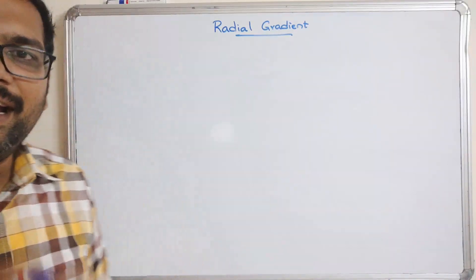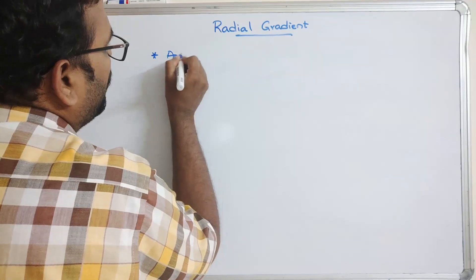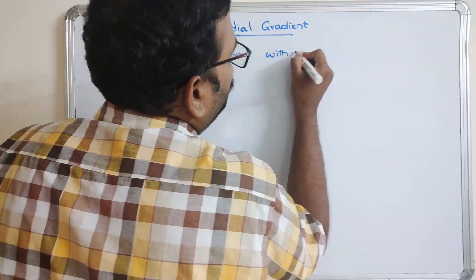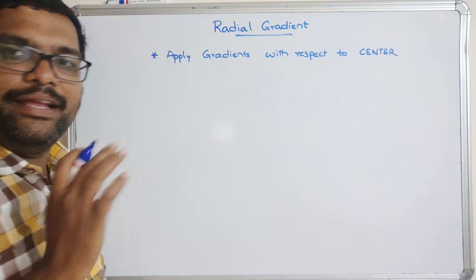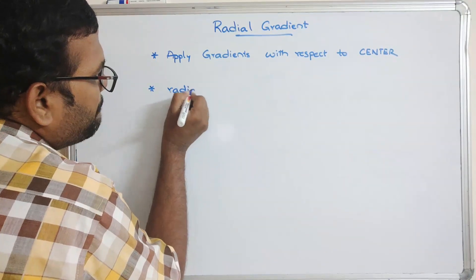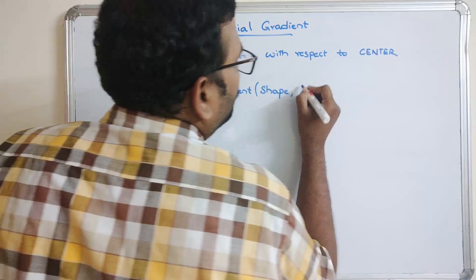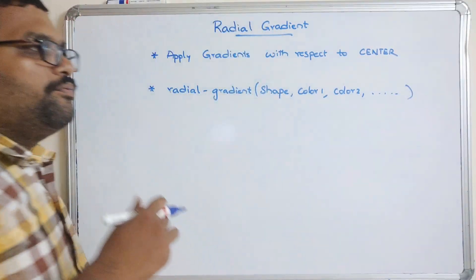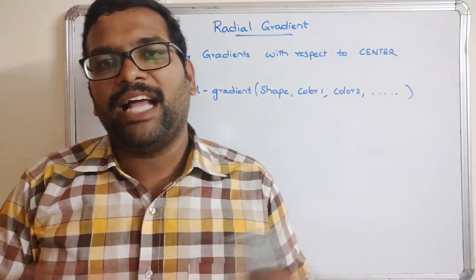In this session, we will go with the Radial Gradient. This Radial Gradient applies gradients with respect to the center — from the center itself. The function is radial-gradient, and the parameters are Shape, Color 1, Color 2, etc. Whatever gradient we want to apply — Conic, Radial, or Linear — we must specify a minimum of two colors and a maximum of n number of colors.